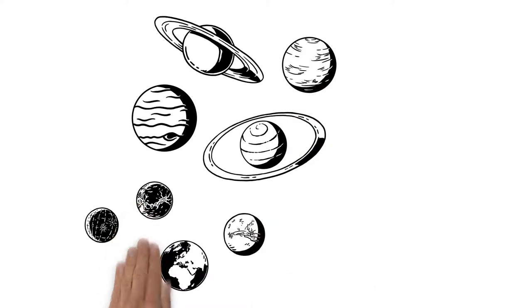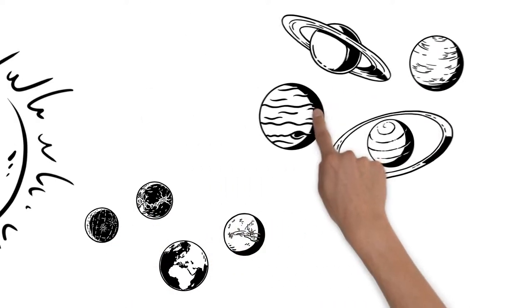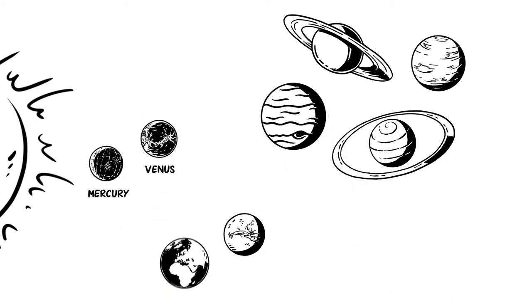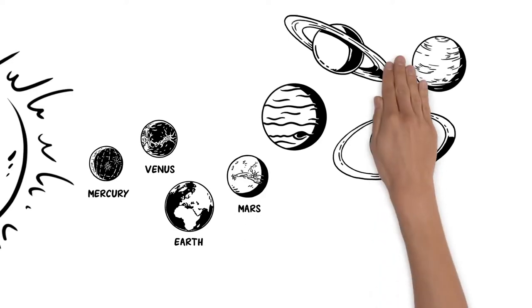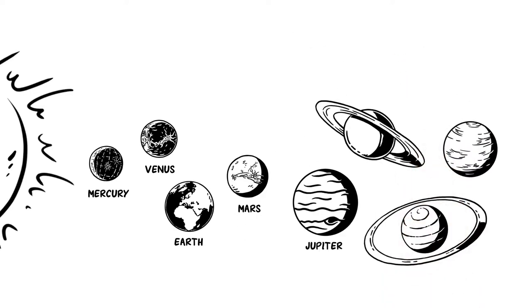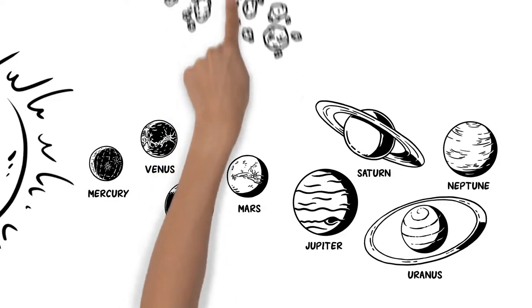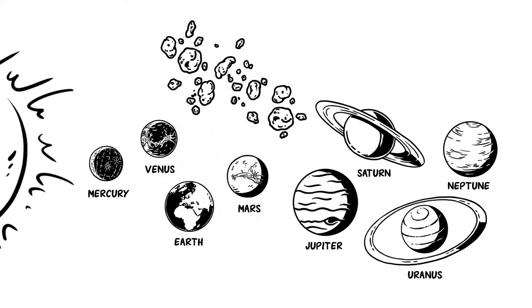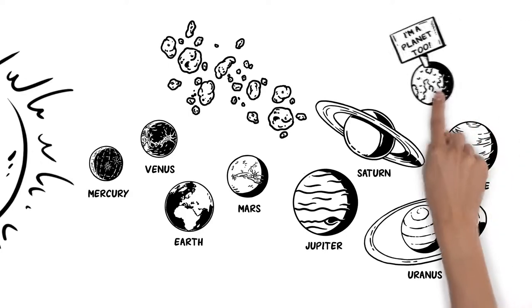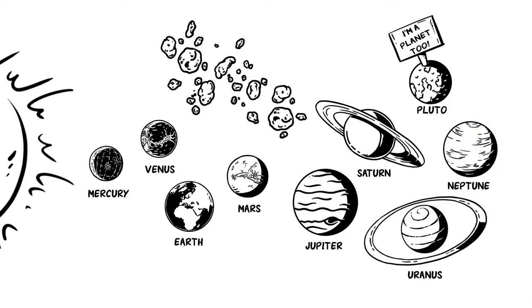Eight planets orbit the Sun. The inner ones are Mercury, Venus, Earth and Mars. And the outer planets are Jupiter, Saturn, Uranus and Neptune. The asteroid belt and the so-called trans-Neptune objects, like the dwarf planet Pluto, are also revolving around the Sun.